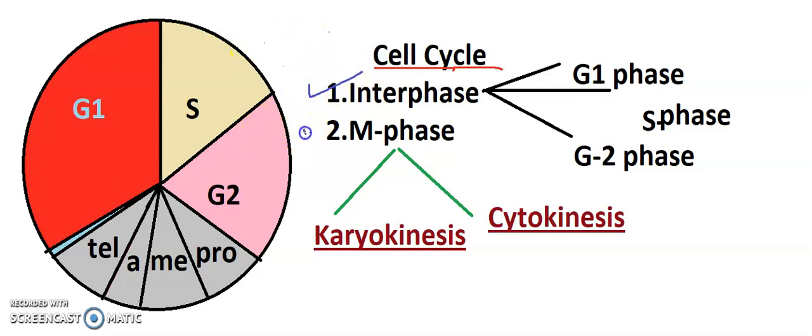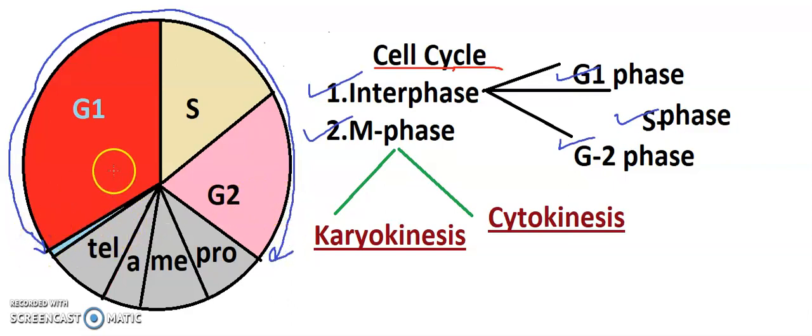That is interphase and M-phase. So interphase is further divided into G1 phase, S phase, and G2 phase. We are going to discuss in detail what happens in this cell cycle, in the different phases of the cell cycle, what actually is going to take place. This is the G1 phase, S, and G2 phase. This is called interphase, which is divided into three sub-phases.